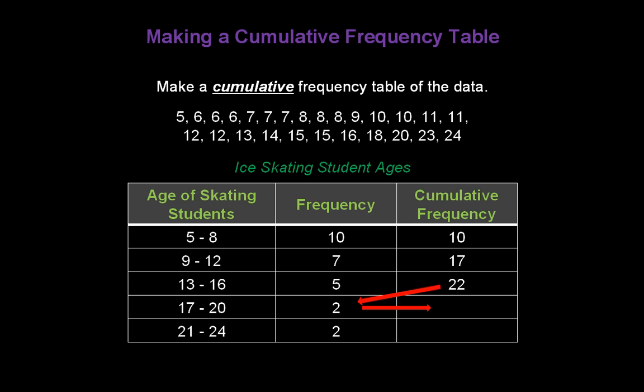We take the 22 and add it to the 2. We've now accounted for 24 data items, and finally take the 24, add it to the 2, and we end up with 26. Now, here's the value of a cumulative frequency table. That 26 at the bottom should match all the number of data items that we started out with in the big red circle at the top.